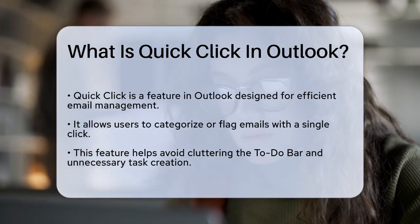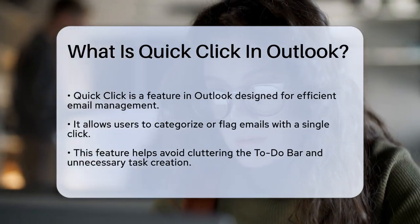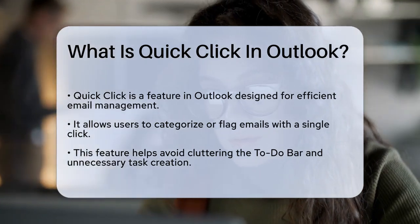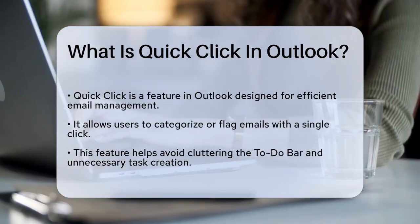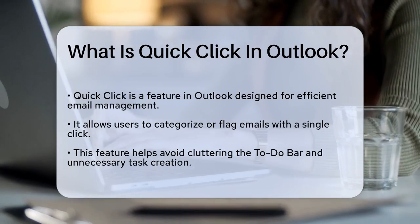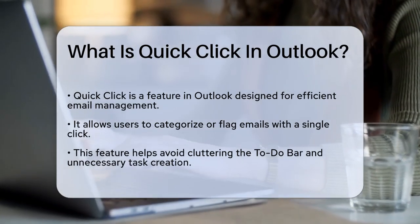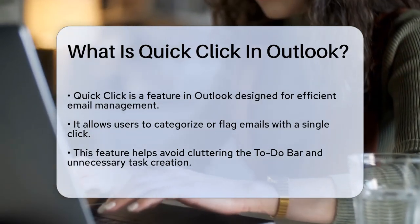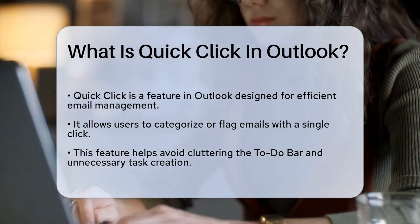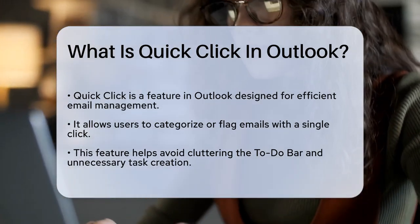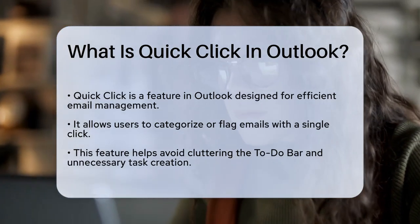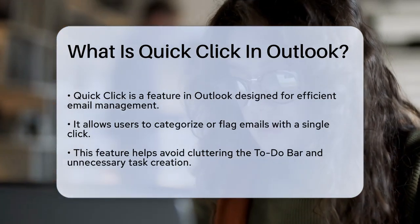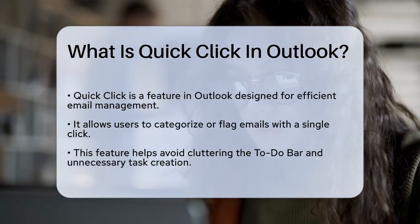Quick Click is a handy tool in Outlook that allows you to categorize or flag emails with just one click. This feature is particularly useful if you want to mark emails quickly without cluttering your to-do bar or creating unnecessary tasks.